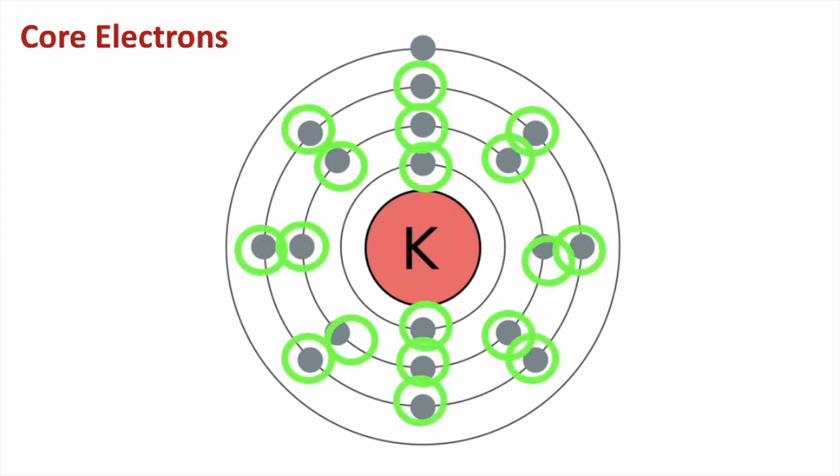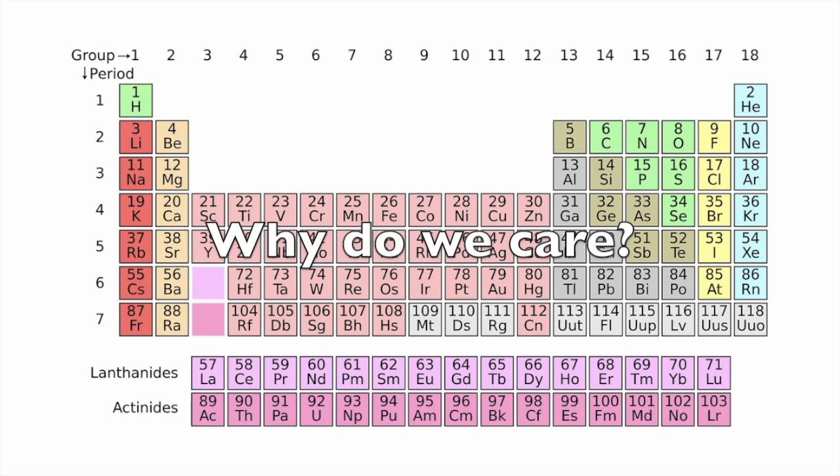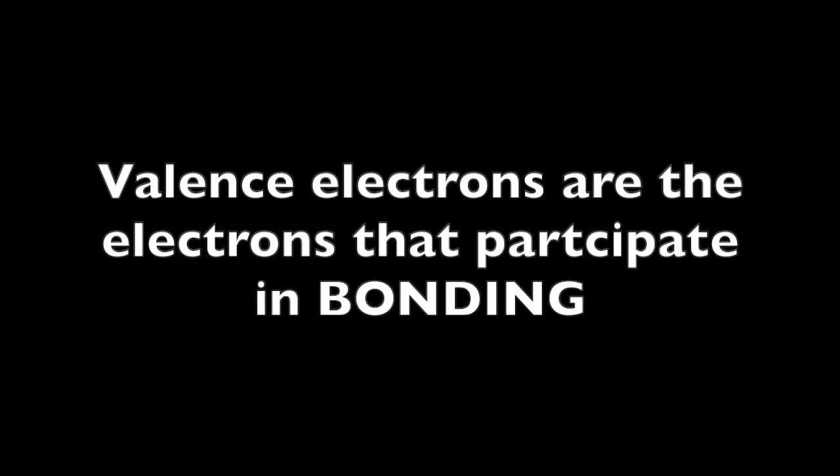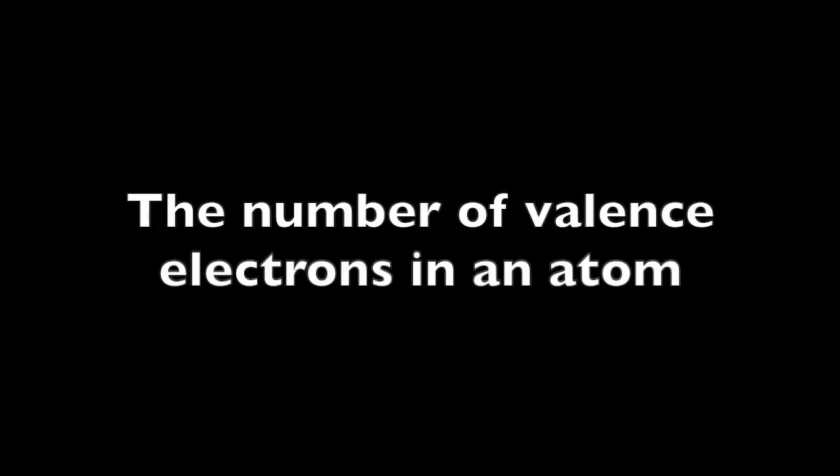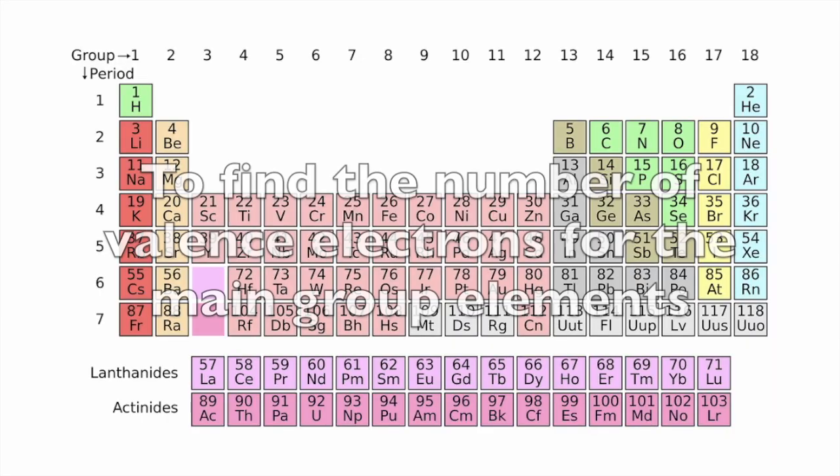Why do we care about valence electrons? Well, valence electrons are the electrons that participate in bonding. The number of valence electrons in an atom determines what other atoms it will bond with, what type of bond the atom will form, and how many atoms can bond with it in a compound.